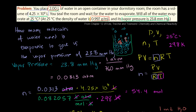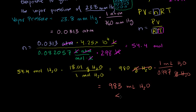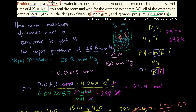Going back to the question: we placed 2 liters of water in the room. We figured out that only 983 milliliters — a little bit less than 1 liter, so a little less than half of the 2 liters — will evaporate to reach our vapor pressure. So to answer the question: will all of the water evaporate at 25 degrees Celsius? No, assuming the room is sealed well. Only a little bit less than half of it will evaporate.